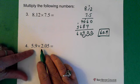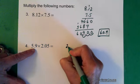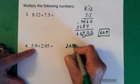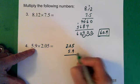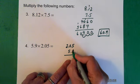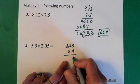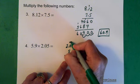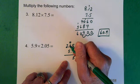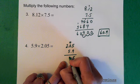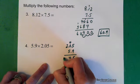Alright. 5.9 times 2.05. So I'm going to put the 2.05 on the top and the 5.9 on the bottom. So 9 times 5 is 45. So 5 goes here. The 4 goes above the 0. 9 times 0 is 0 and we add the 4. So that gives us a 4. 9 times 2 is 18.